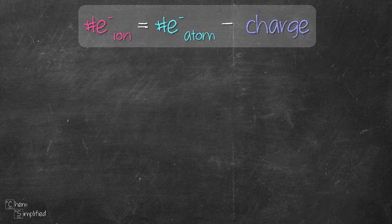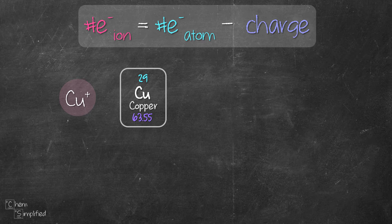Let's test out this formula using copper 1 ion, which is Cu+, as our first example. From the periodic table, we can find the atomic number for copper, which is 29.